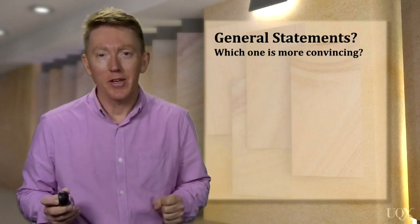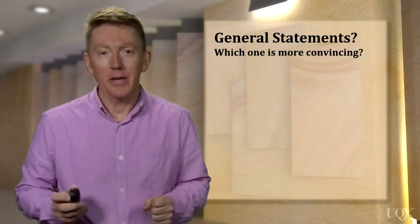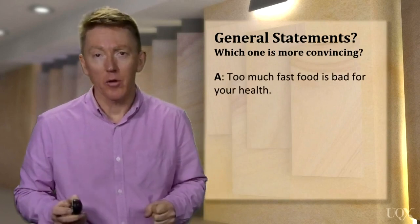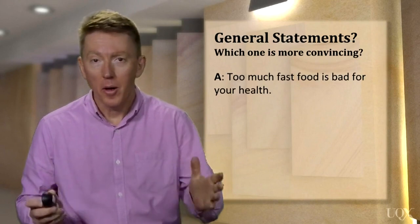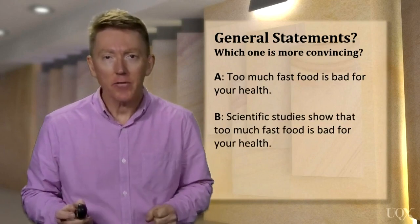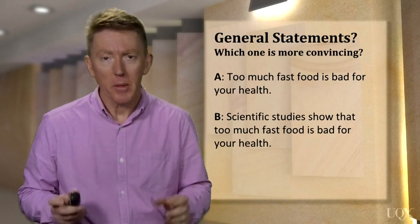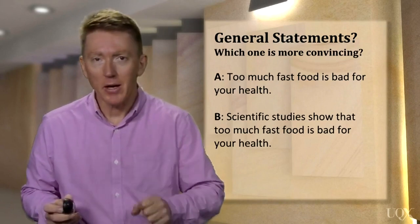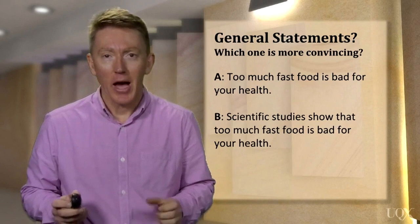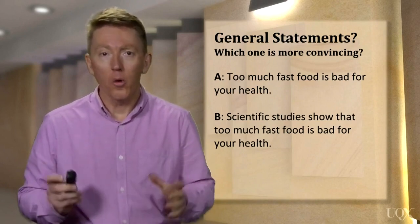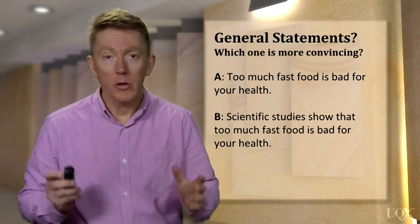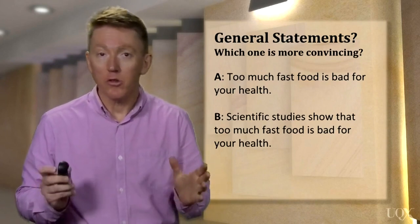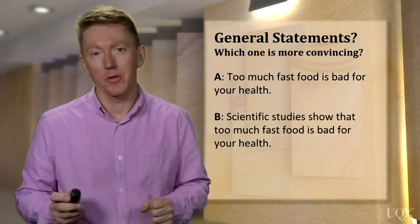Which one is more convincing, A or B? A: Too much fast food is bad for your health. Or B: Scientific studies show that too much fast food is bad for your health. If you answered B, you're correct. An opinion that is held by many people, or by scientists, or by a respected person, is more convincing than an opinion which is only held by one person — the writer.